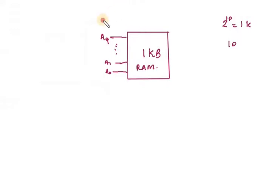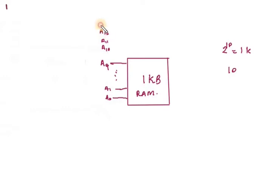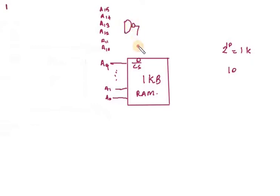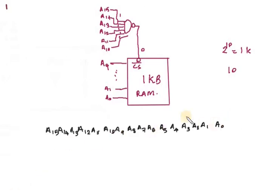The remaining lines — that means A10, A11, A12, A13, A14, and A15 — these lines are connected with chip select. We can use any logic — AND gate or NOT gate — connected to the chip select. I apply the AND gate here, so these lines are connected. To get a zero output here we have to apply 1, 1, 1, 1, 1, 1. So A10 to A15 various lines are used for chip select.